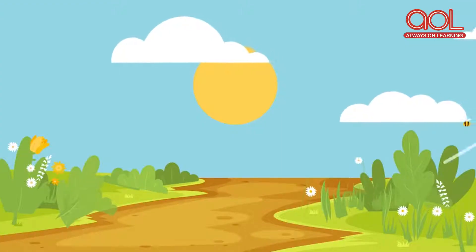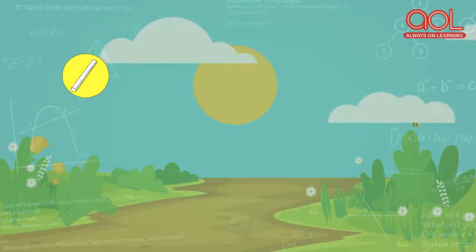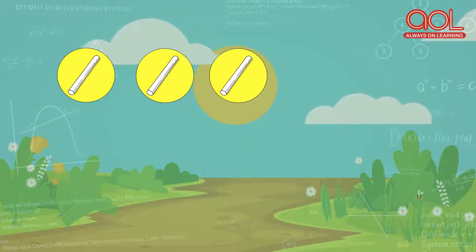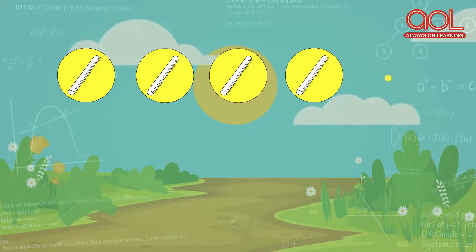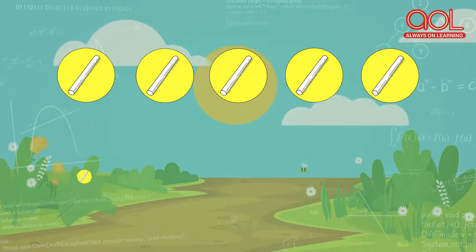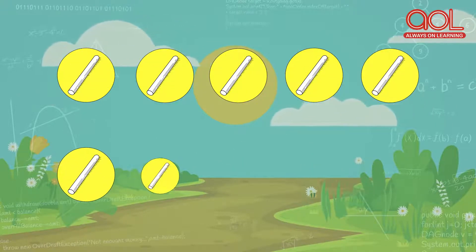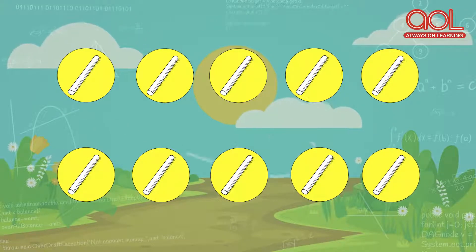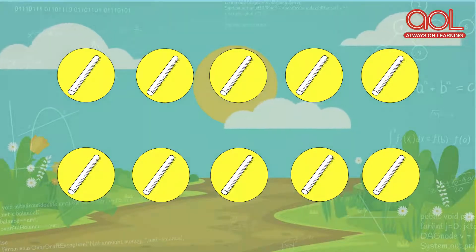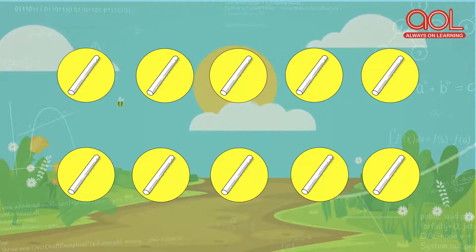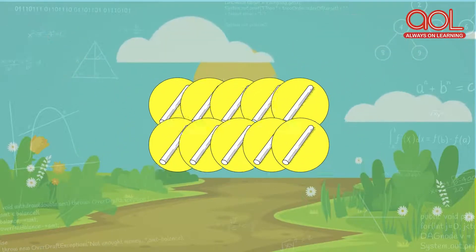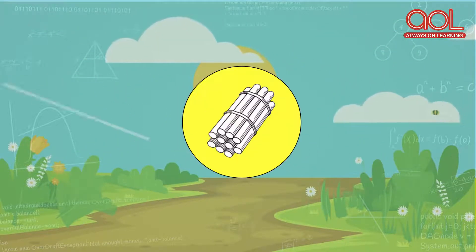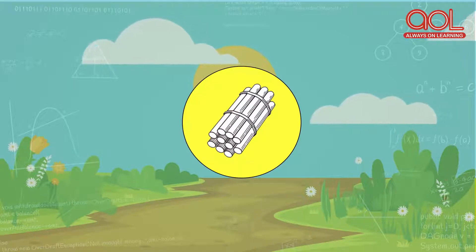Here we have one, two, three, four, five, six, seven, eight, nine, ten. We have ten ones. When ten ones are grouped together, we call it as one ten.